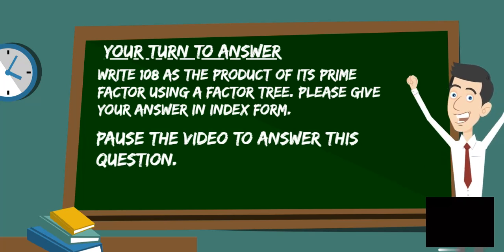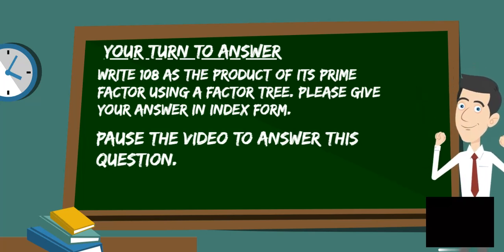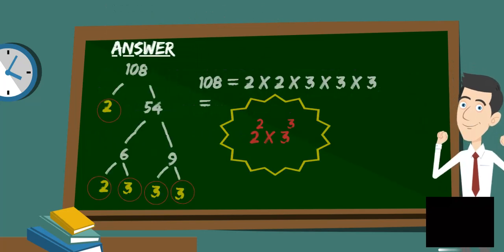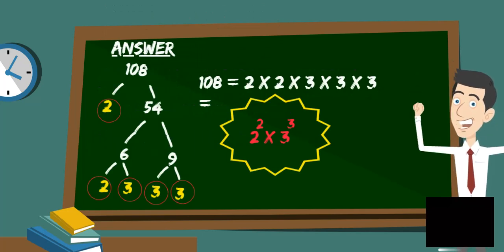Write 108 as the product of its prime factor using a factor tree. Please give your answer in the index form. Pause the video to answer this question. The answer is 2 squared times 3 cubed.